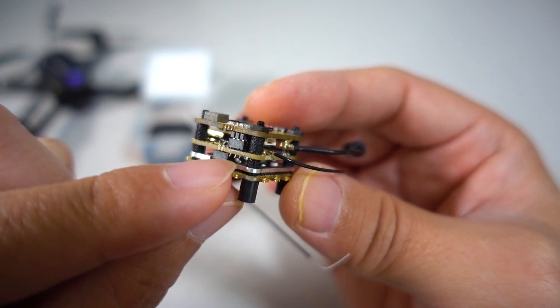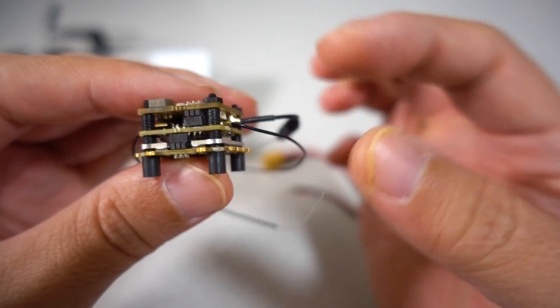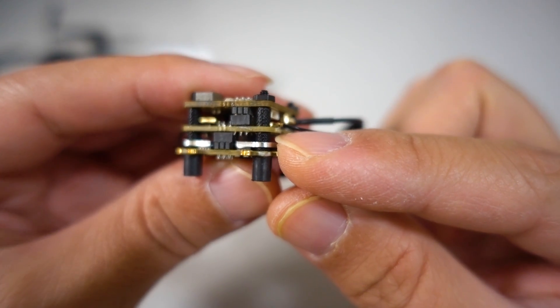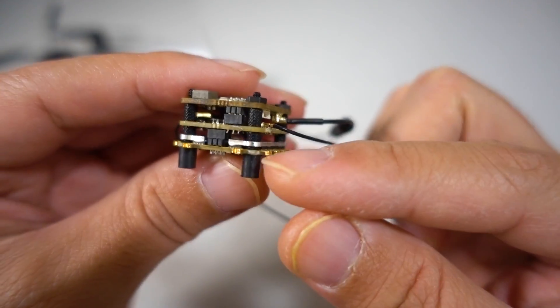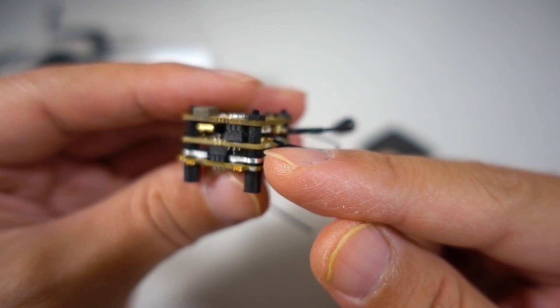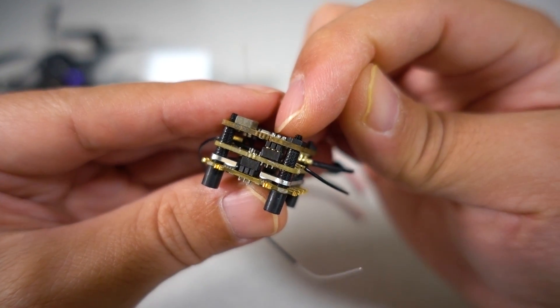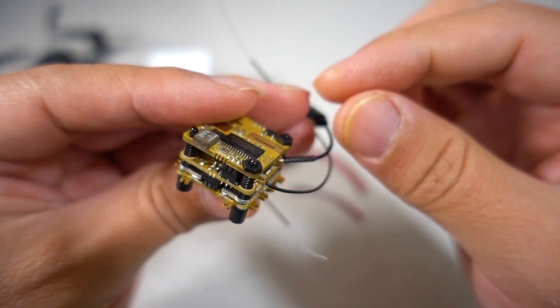And the reason they don't want you to take this apart is they have these small pins here that connect all the boards, and then they have these M2 metal standoffs that connect all of the boards together. So it shouldn't break in a crash, it should be fairly robust, but if you take it apart, you've got to be very careful not to damage these pins, because if you do, then you're kind of toast.